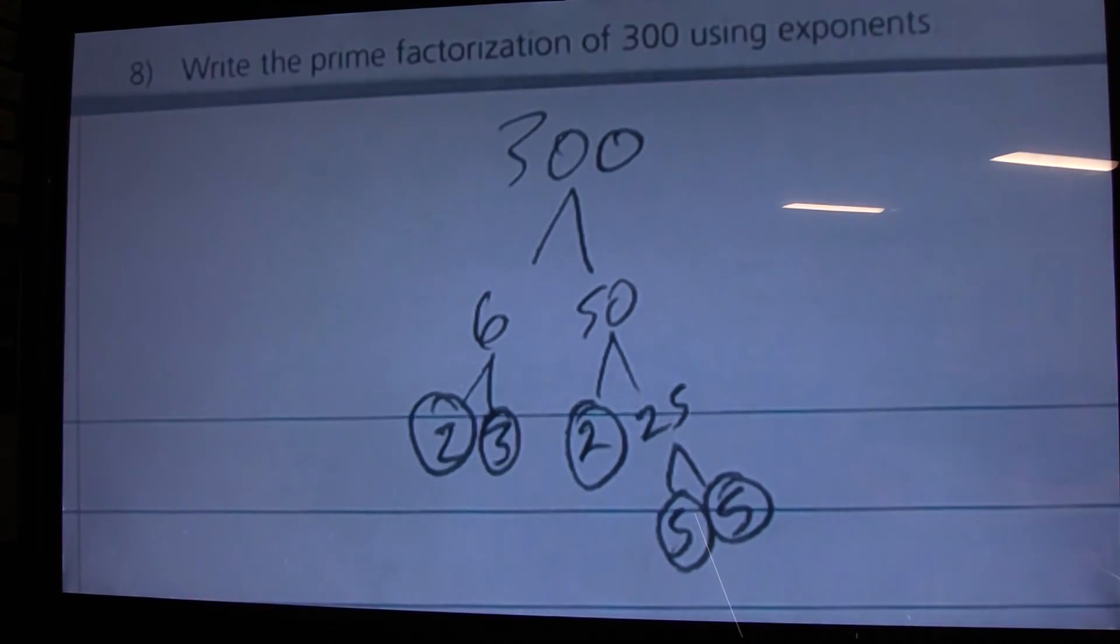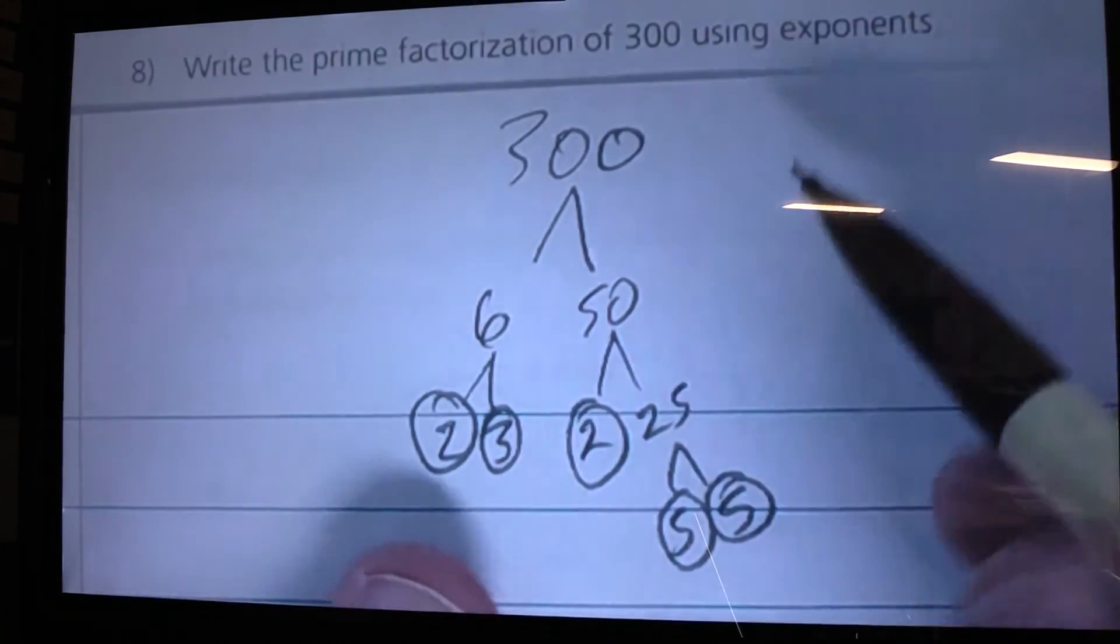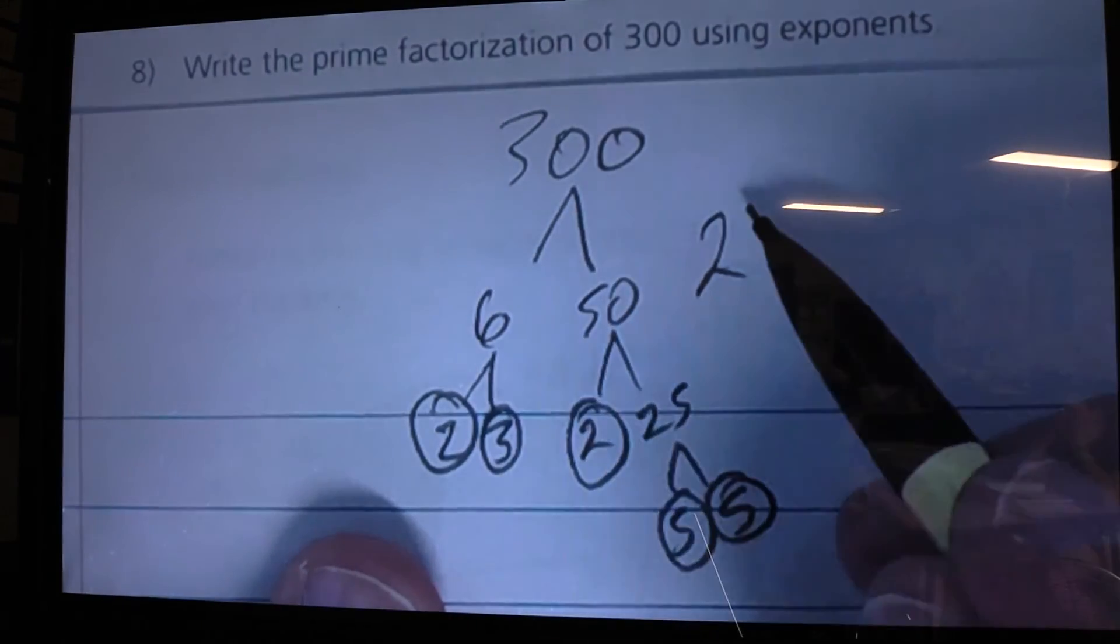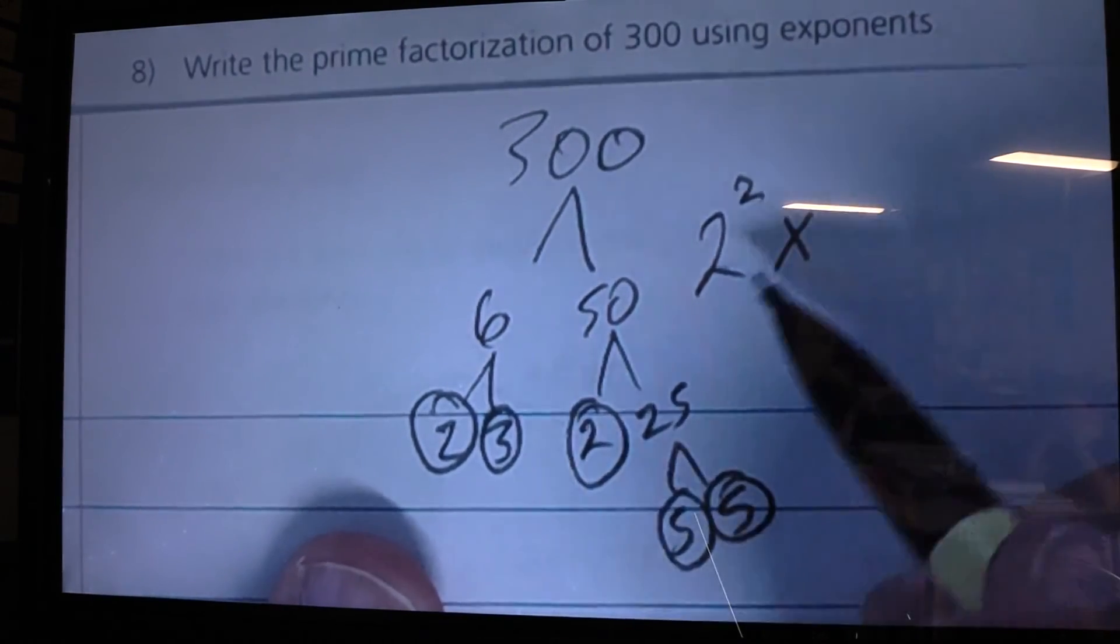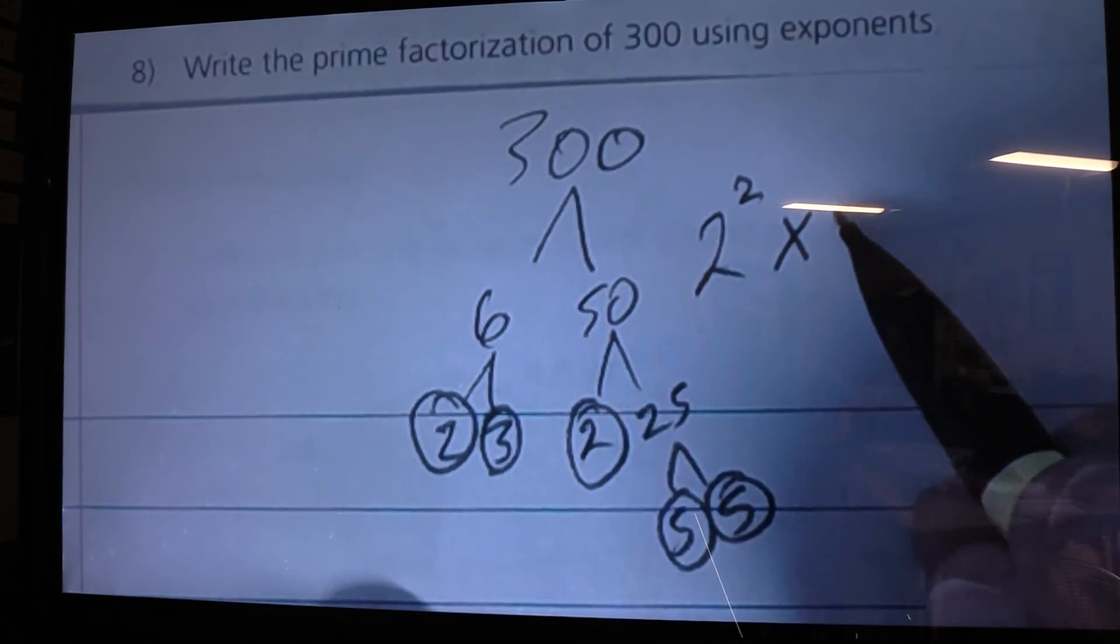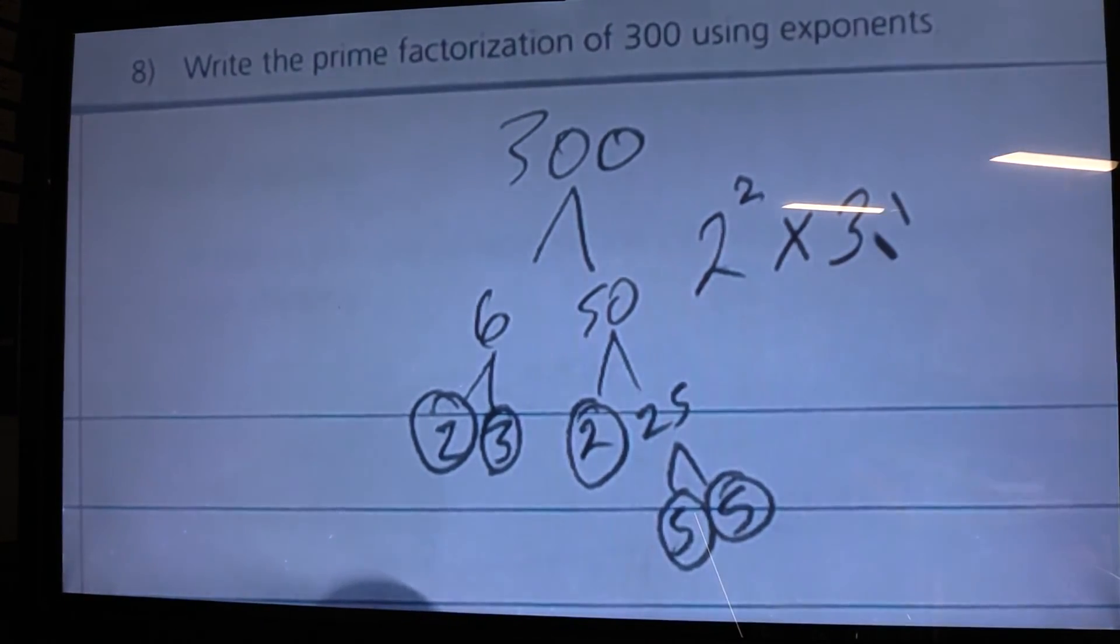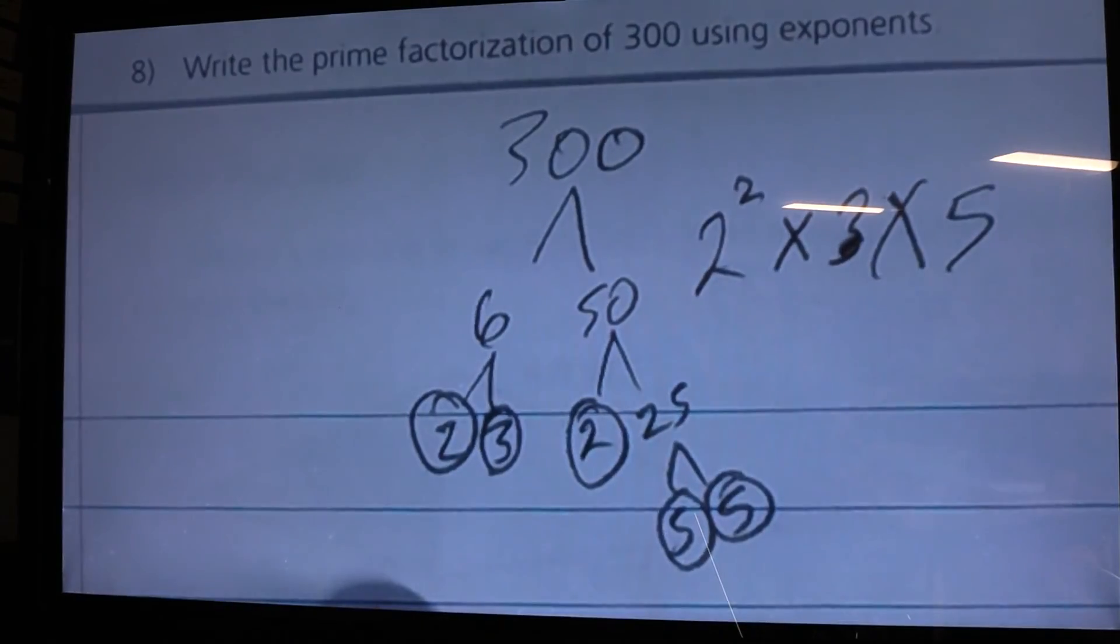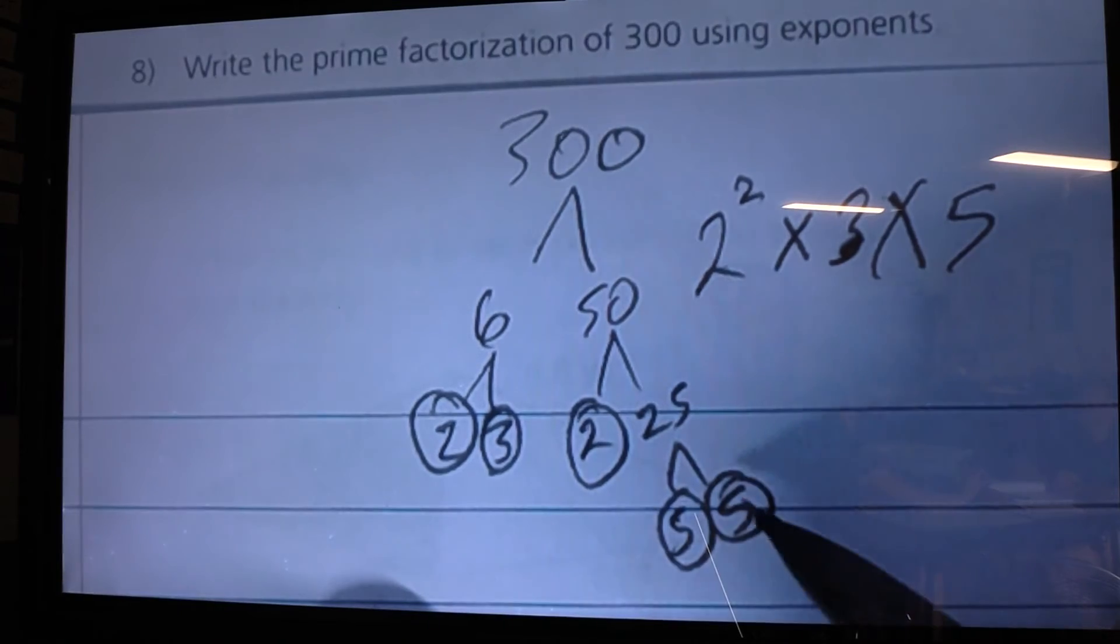So now all I have to do is figure out what is the prime factorization and use my exponents. So I have 2, and I have one, two twos. And I have 3, and I have only one three. And then I have 5, and I have one, two fives.